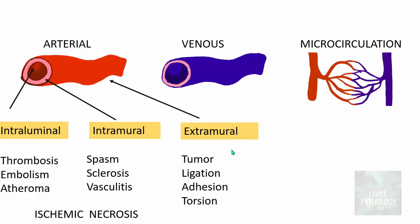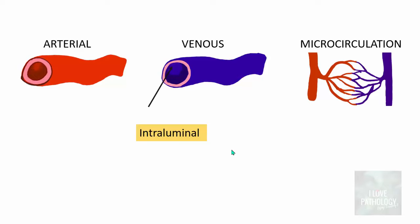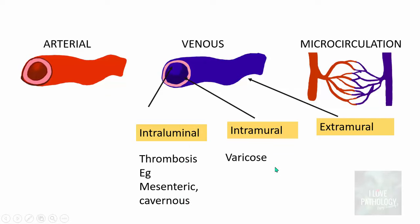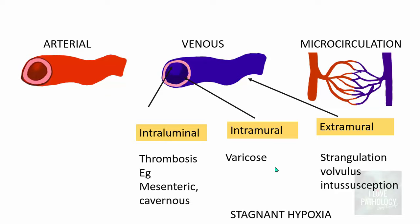Now let us look at venous causes. All arterial occlusions result in ischemic necrosis. Venous causes can also be classified as intraluminal, intramural, and extramural. Intraluminal causes include thrombosis — for example, mesenteric thrombosis or cavernous venous thrombosis. Intramural causes most commonly include varicose veins. Extramural causes include strangulation, volvulus, or intussusception of the bowel. Obstruction to the outflow of venous blood results in stagnant hypoxia, leading to tissue necrosis and infarction.